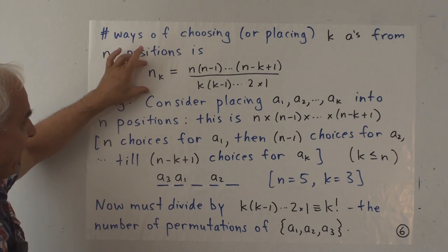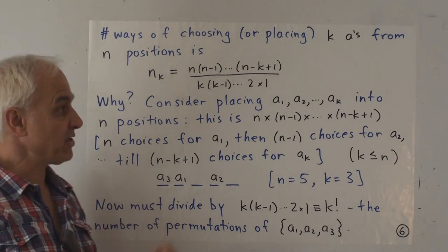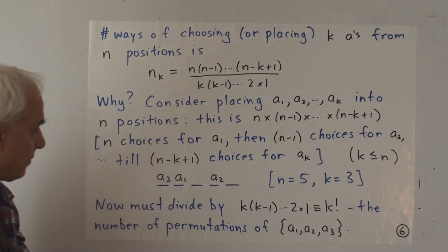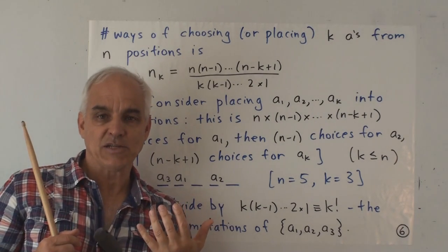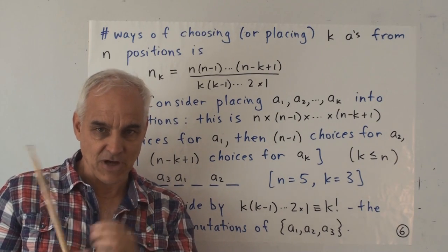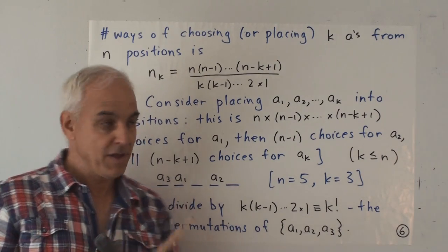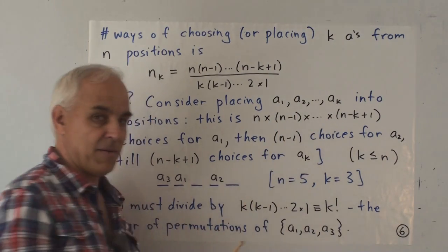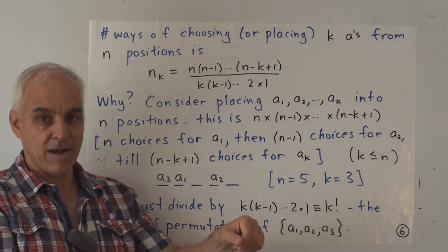This kind of formula, I think, probably is first due to Pascal. And let's explain where does this formula come from. So we're interested in seeing why this combinatorial number is given by this algebraic expression. And one nice way of seeing that is to consider the a's not as being all interchangeable, but rather ordering them. So putting little subscripts on them so that we now have an ordered set of a's rather than an unordered set of a's.